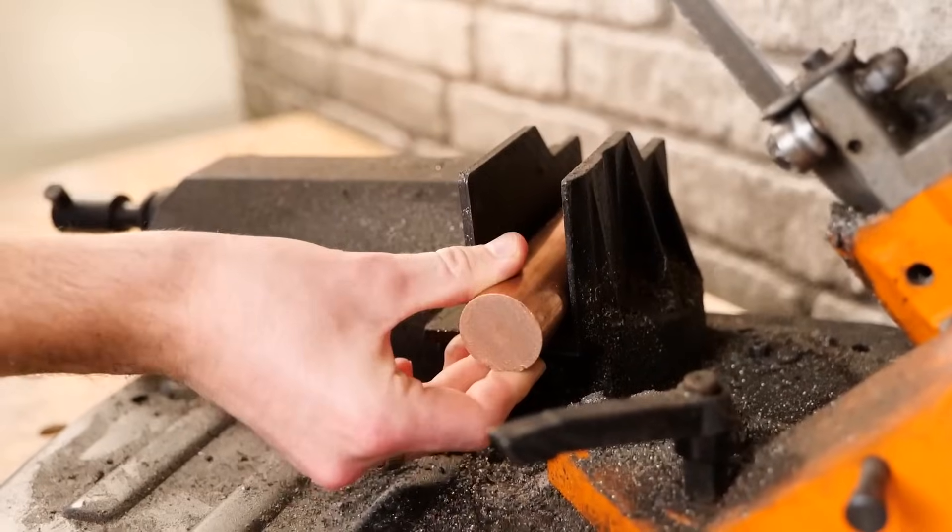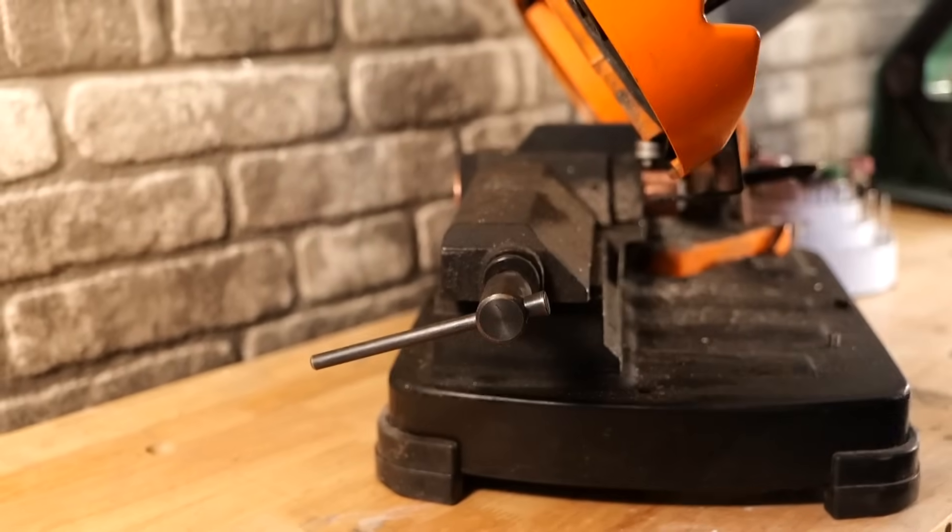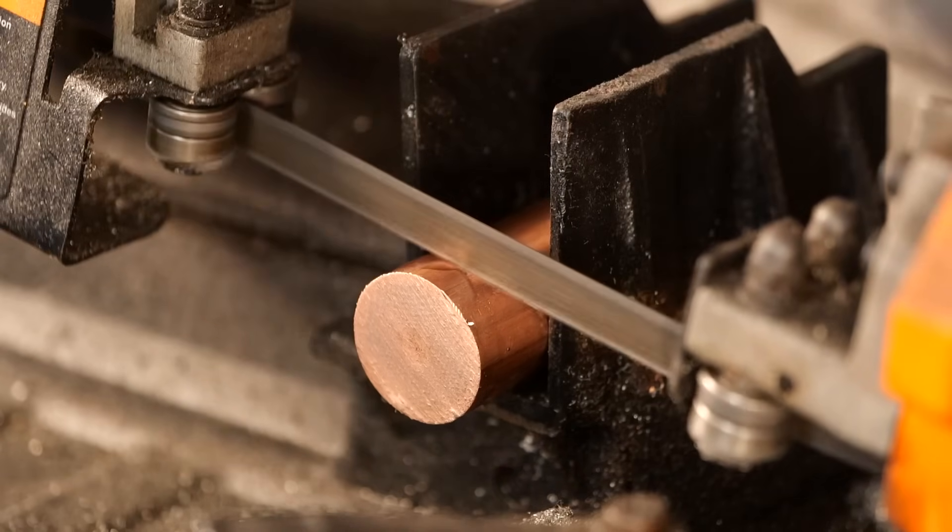First, we're going to need a smaller piece of superconductor to work with. So I'm going to take the whole rod over to my metal bandsaw and we're going to slice off a piece that's about eight millimeters wide. That'll give us the perfect amount to work with without wasting too much excess.